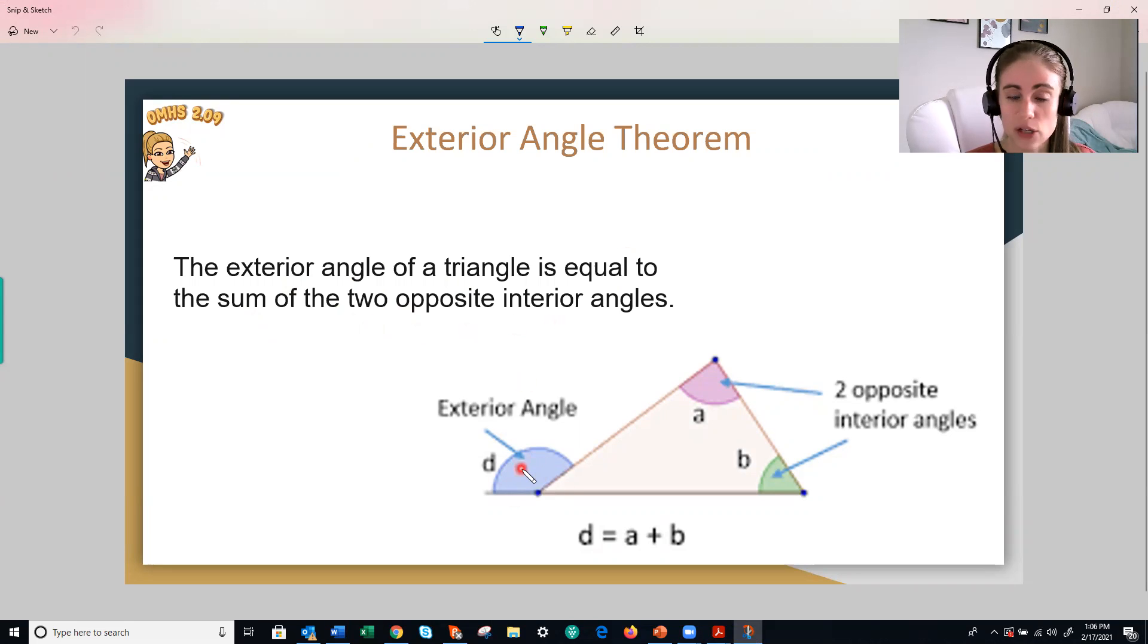Sum is the answer to an addition problem of two opposite interior angles. So right here we have angle D, these two angles are opposite, so they're across from it. And notice that they're both on the interior, so they're on the inside of the triangle. So that means this exterior angle D is equal to the sum of, so the addition of, my two inside angles, A plus B.